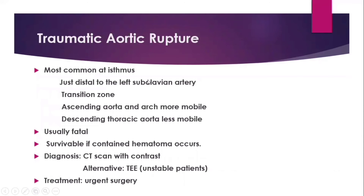Traumatic aortic rupture is most common at the isthmus position, just distal to the left subclavian artery, which is a transitional zone. The ascending aorta and arch are more mobile, while the descending thoracic aorta is less mobile. It is usually fatal but survivable if there is a contained hematoma.